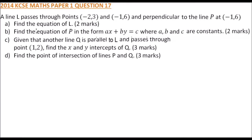2014 paper 1 question 17. We are told a line passes through points (-2, 3) and (-1, 6), and perpendicular to the line p at (-1, 6). Find the equation of L — so this is part a.